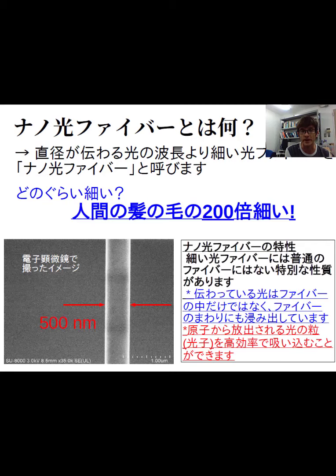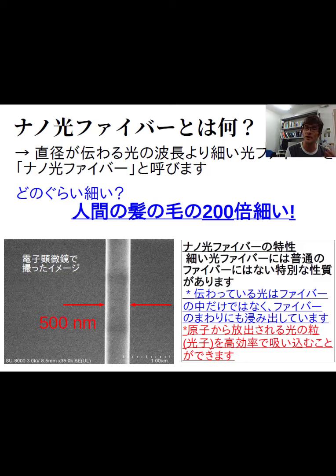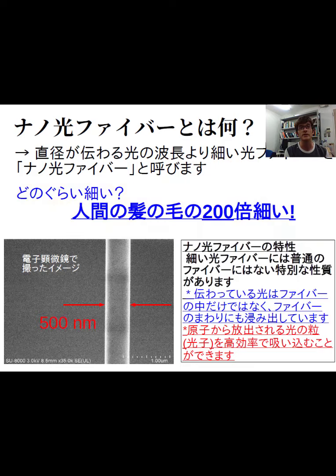What is an optical nanofibre? Well, you probably have heard about optical fibers. A typical optical fiber has a size, if you remove its protective jacket, of approximately 125 microns in diameter. That's already certainly quite small. However, the kind of optical fibers that we are using are much, much smaller in diameter — about 200 times smaller than the hair on your head, and it's very hard to see them with the naked eye.